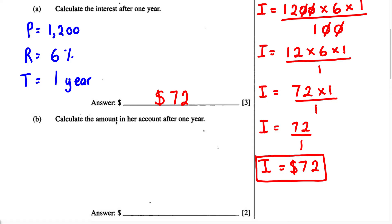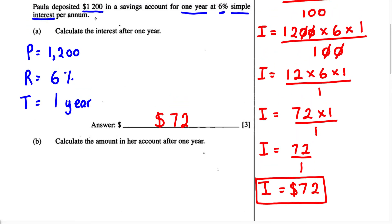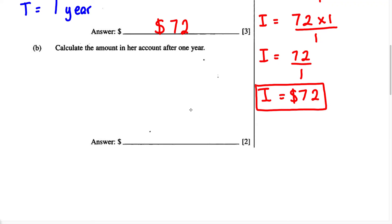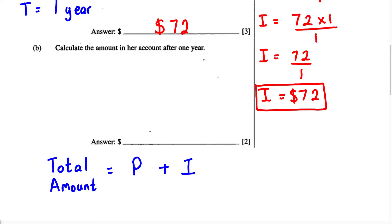For Part B, it says: calculate the amount in her account after one year. They want us to find the total amount in her account after she deposited $1,200 for one year. To calculate this, we use the formula: Total Amount equals Principal (P) plus Interest (I). The principal is the starting amount — the money either borrowed or deposited — plus the interest after one year.